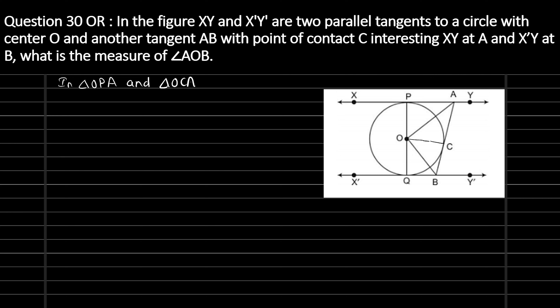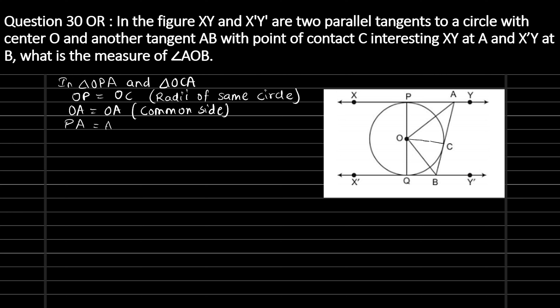In triangle OPA and triangle OCA: OP is equal to OC because they are radii of the same circle. OA is equal to OA as it is a common side. And PA is equal to AC.